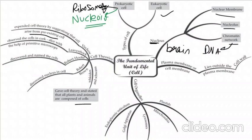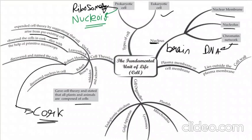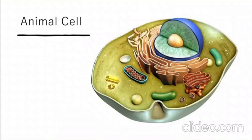Robert Hook was the first to observe cells — he saw them in cork cells, which were dead cells. Later, with an advanced microscope, Antony van Leeuwenhoek observed living organisms. Now talking about the plasma membrane — it is the outer covering in animal cells. Plant cells have one more covering: the cell wall. Other organelles include plastids, mitochondria, lysosomes, Golgi apparatus, and endoplasmic reticulum.